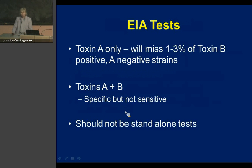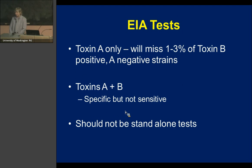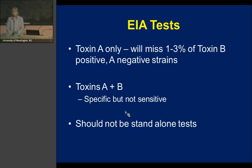The EIA test: many hospitals used only a toxin A test, which will miss a few percent of strains that produce toxin B but not toxin A. Many hospitals then moved to an EIA for both toxin A and B. These tests are sensitive but not very specific, and they should not, at this point, be used as standalone tests.